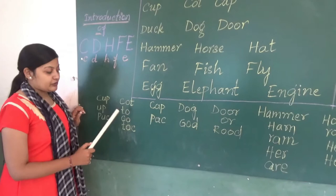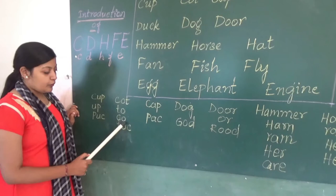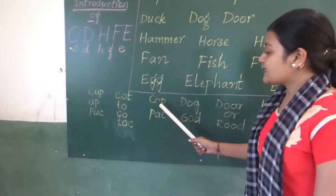Likewise, C, O, T — court. When you reverse it, you can create more words, such as T, O — 'to'; C, O — 'co'; and T, O, C — 'toward'. Okay.